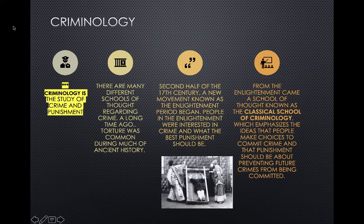A long time ago, torture was really common for those that had committed crime as a way of punishment, especially during ancient history. During the second half of the 17th century, a new movement known as the Enlightenment period began. People in the Enlightenment were interested in crime and what the best punishment should be. From the Enlightenment school came the classical school of criminology, which emphasized the ideas that people make choices to commit crime and that punishment should be about preventing future crimes.